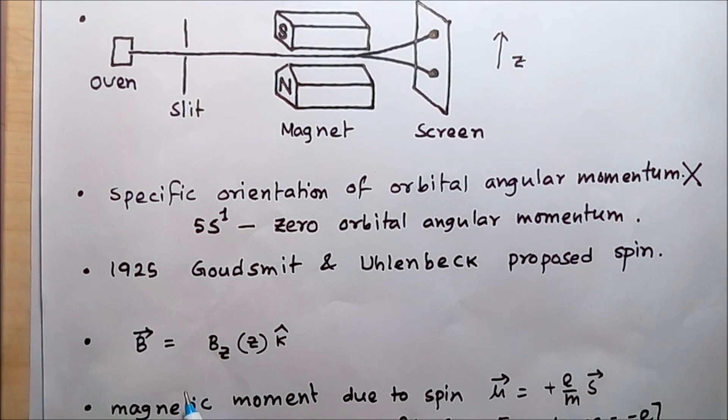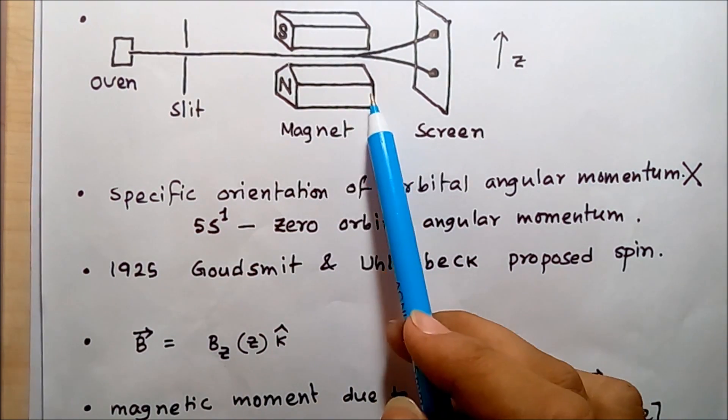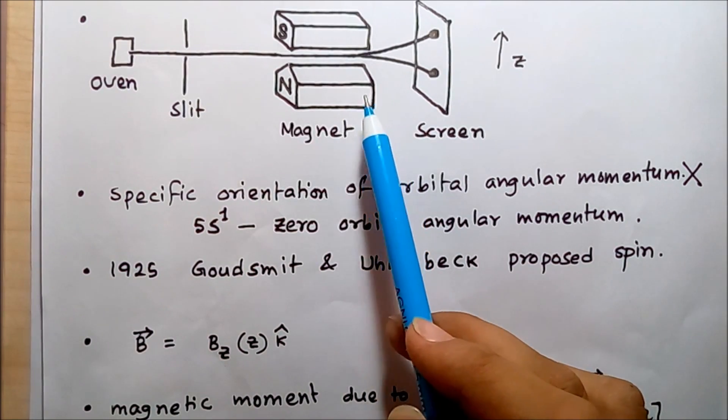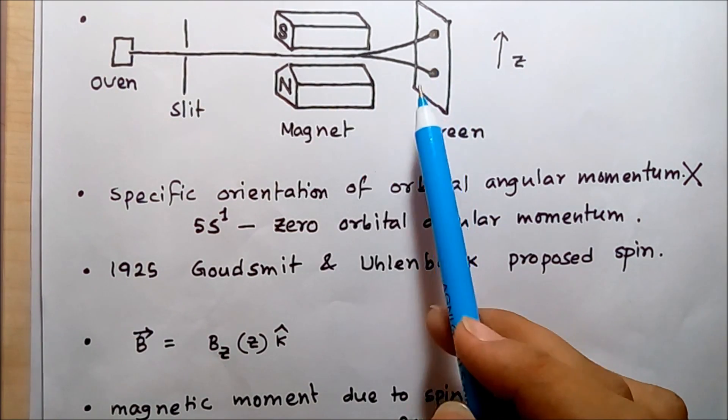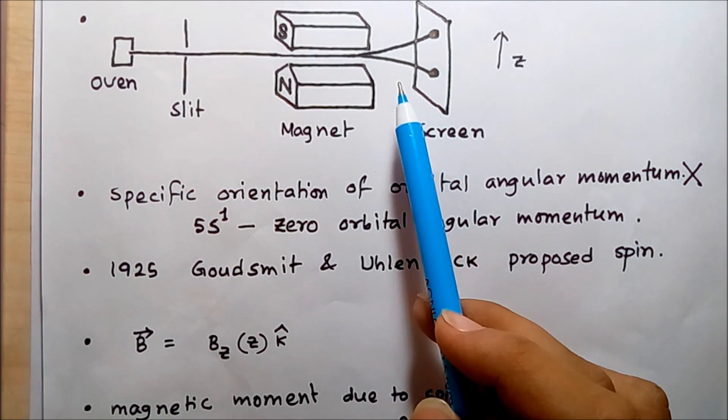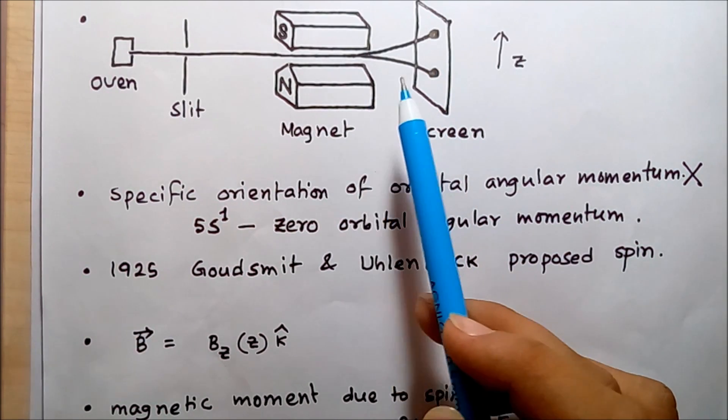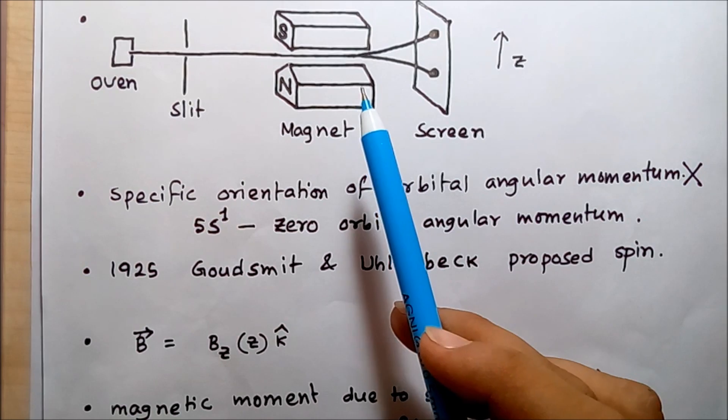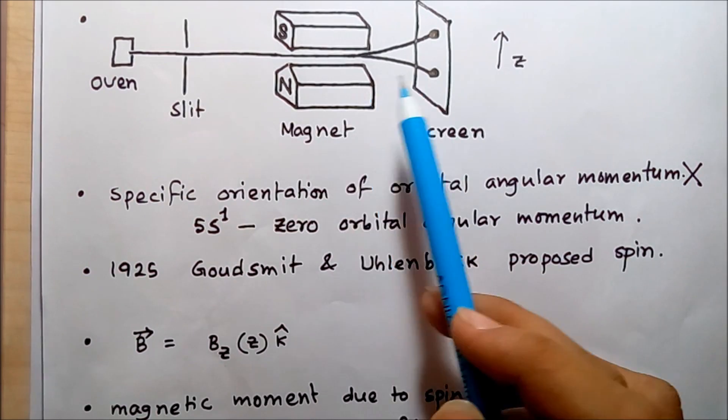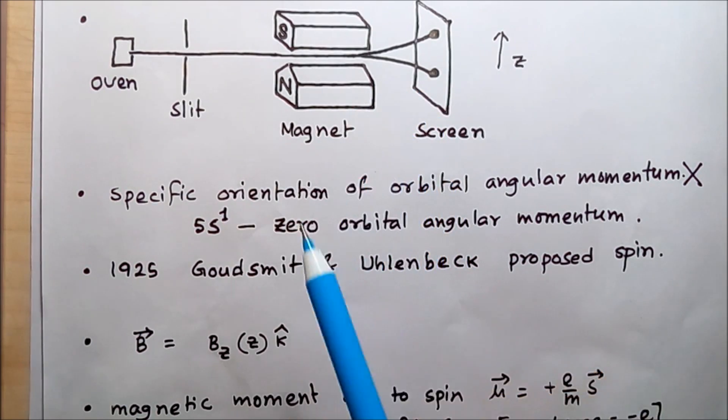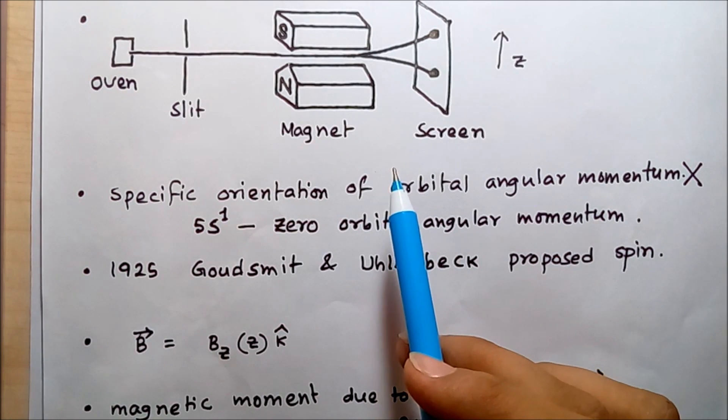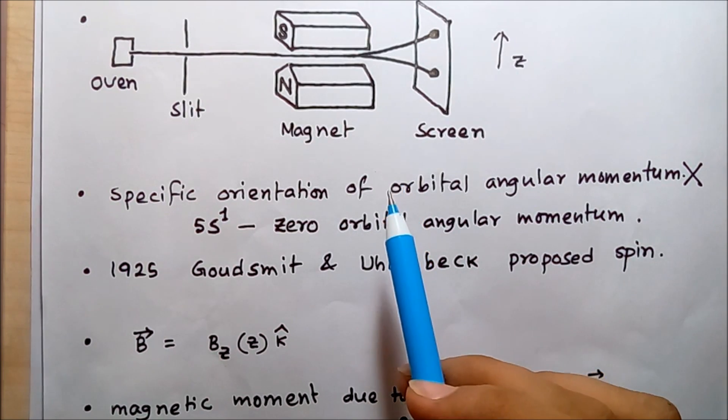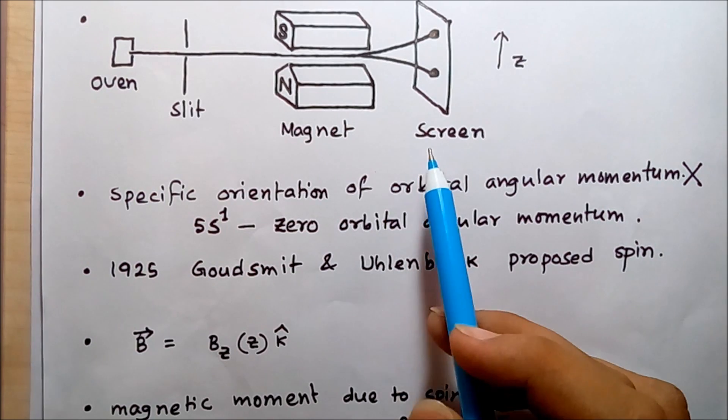In this experiment, the magnet was specially designed to produce a magnetic field only in the z-direction. The strength of this magnetic field varied from point to point in the z-direction, so it is an inhomogeneous magnetic field whose strength depends on z.